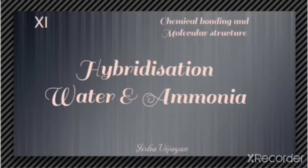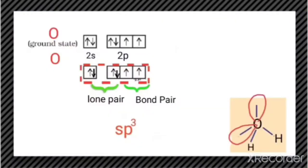Hello students. Let us discuss the concept of hybridization in water and ammonia. First let us talk about water. In water molecules the central atom is oxygen. So we need to write the ground state electronic configuration for oxygen, that is 2s2 2p4.